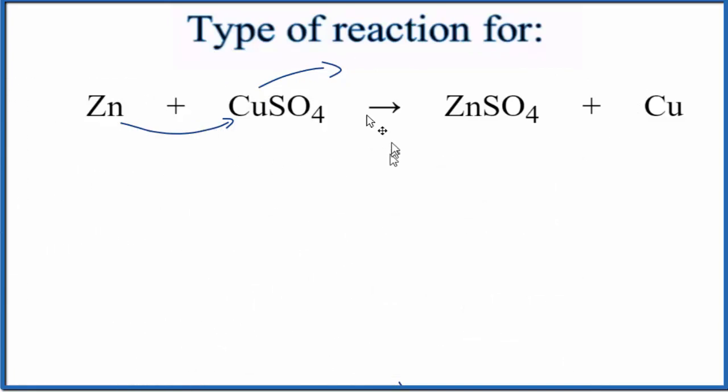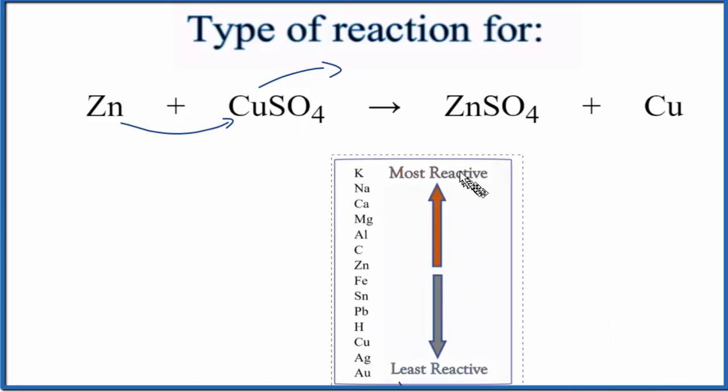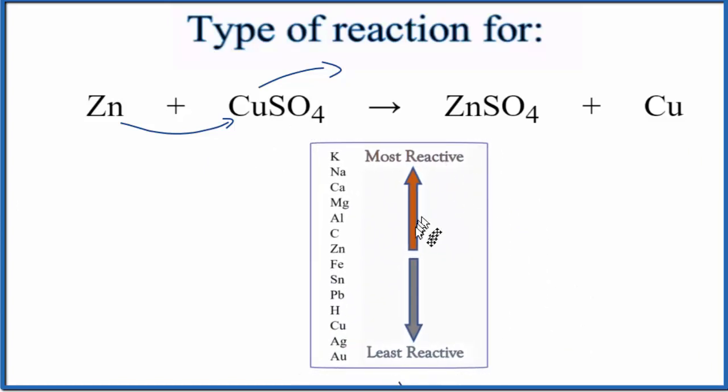We can tell if a single displacement reaction is going to take place by looking at the activity series of the metals. So we have our activity series here, and we look down, and here's zinc.